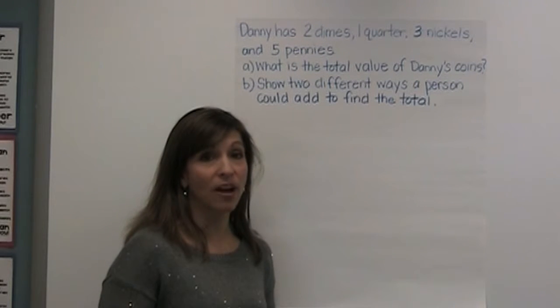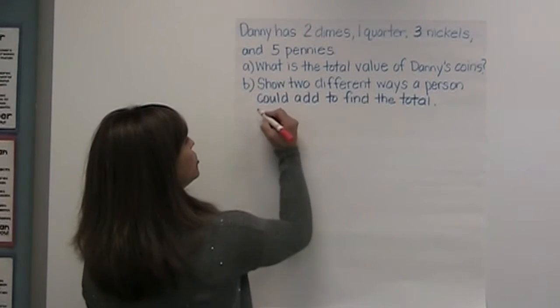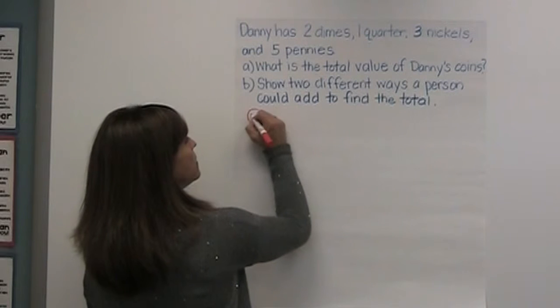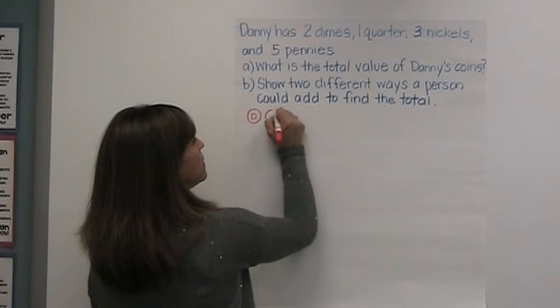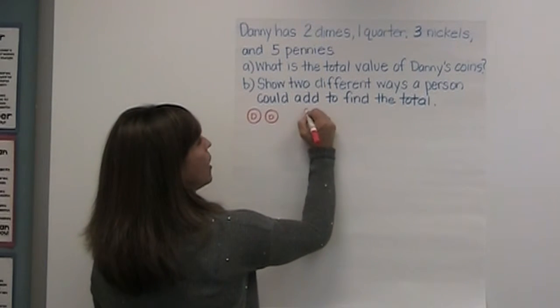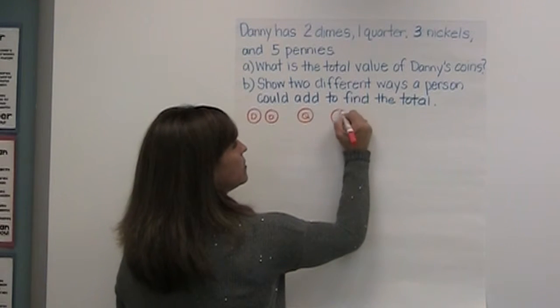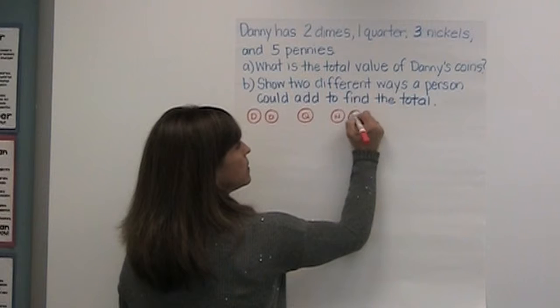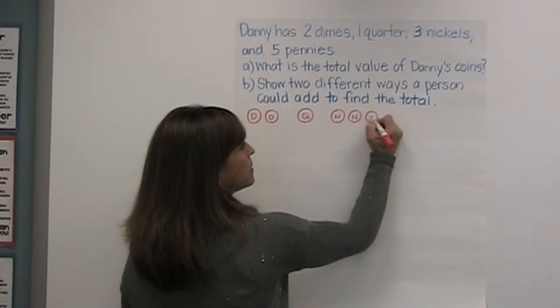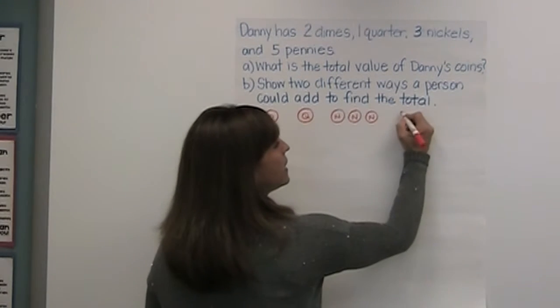I'm going to start by drawing a picture of my coins. He has two dimes, one quarter, three nickels, and five pennies.